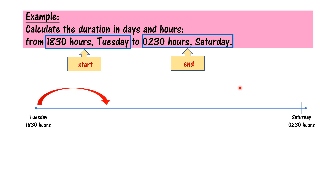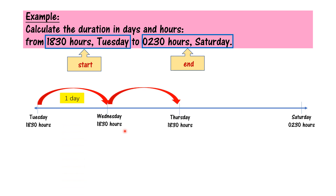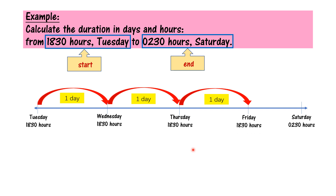One day later, Tuesday will be Wednesday, and the time still the same — 18.30 hours. And then from Wednesday to Thursday — this is one day — time remains the same, 18.30 hours. Masa tetap sama, hari sahaja berubah. Another one day — Thursday to Friday — 18.30 hours.